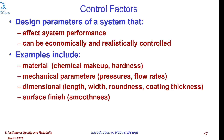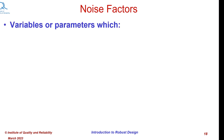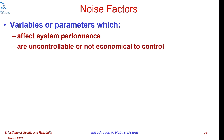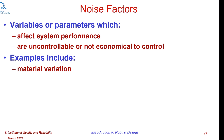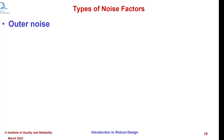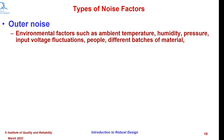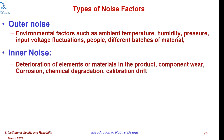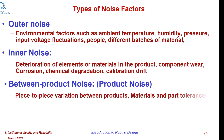The noise factors are variables or parameters which affect system performance but are uncontrollable or not economical to control by the designer. Examples include material variation and environment such as temperature, humidity, and external vibrations. Noise factors can be further classified as: outer noise, due to environmental factors such as ambient temperature, humidity, pressure, input voltage fluctuations, people, and different batches of material; inner noise, due to deterioration of elements or materials in the product, component wear, corrosion, chemical degradation, calibration shift, and drift; and between-product noise, due to piece-to-piece variation between products, materials, and part tolerances.